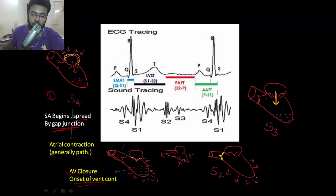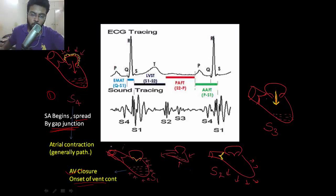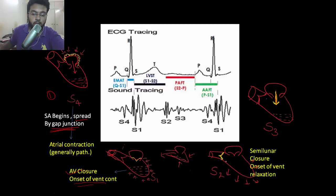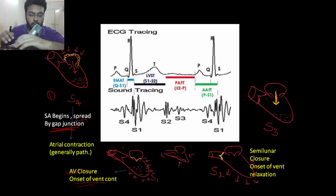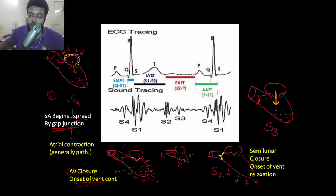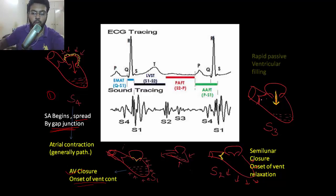Ventricular contraction empties the ventricle into the aorta. Then ventricular relaxation begins, and once the ventricle starts relaxing, the open aortic valve closes, producing the second heart sound, which marks the onset of ventricular relaxation. When the ventricle is completely relaxed, the mitral valve opens and there is passive collection of blood into the ventricle, which sometimes produces the third heart sound due to rapid passive ventricular filling.